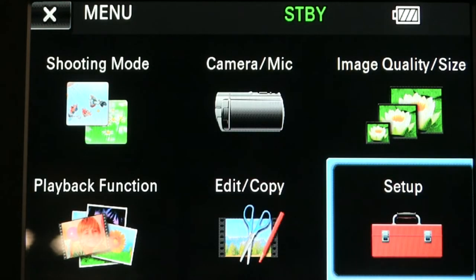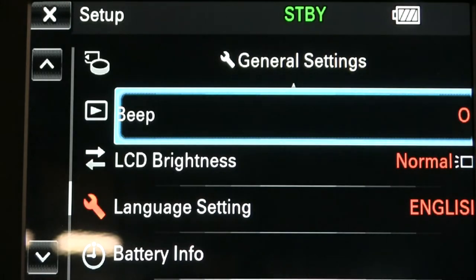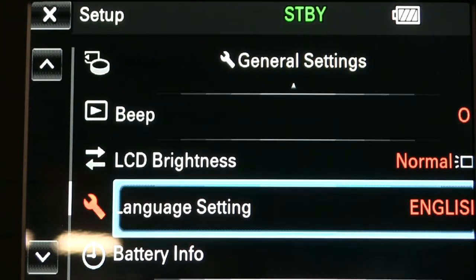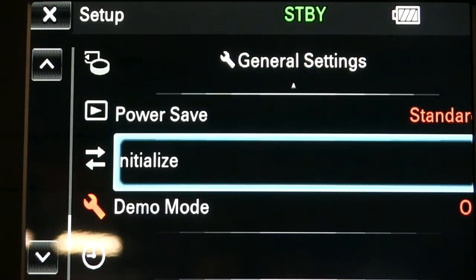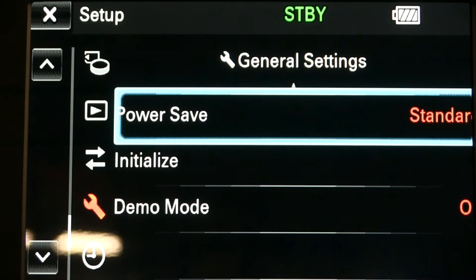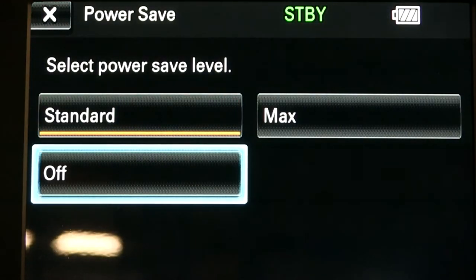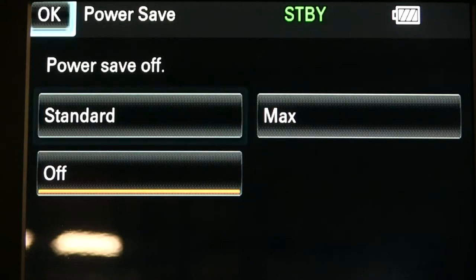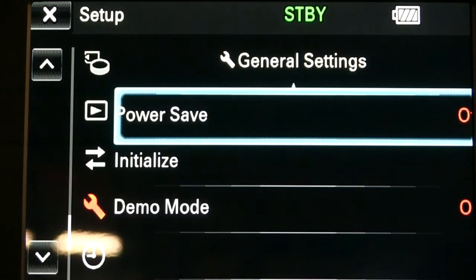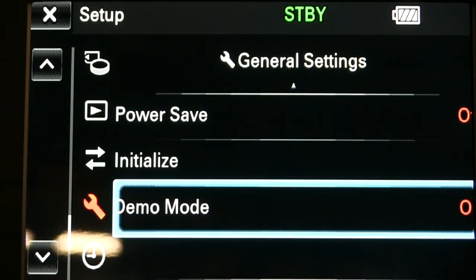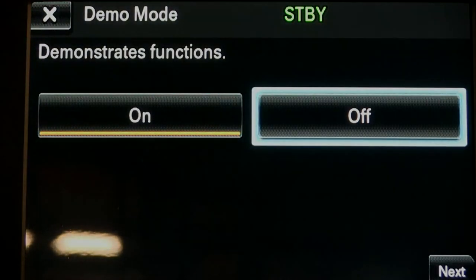Now, to program your camera so it won't auto turn off after a few minutes, go to setup, and then scroll down until you see something that either says power save or eco mode. And then go ahead, click into that, and turn power save or eco mode off. It varies based on which model you have. Also, if you see an option that says demo mode, you would want to go into that and turn that off as well.